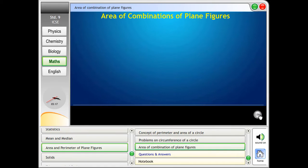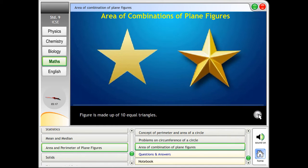Combinations of Plane Figures. Consider the figure. The figure is made up of 10 equal triangles. Area of triangle equals 1/2 into B into H.